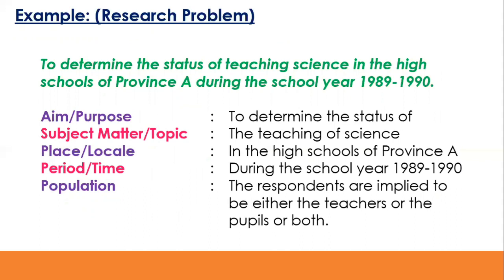To better understand what a research problem is, here's an example: 'To determine the status of teaching science in the high schools of Province A during the school year 1989 to 1990.' Using the elements — the aim or purpose is 'to determine the status of.' The subject matter is 'the teaching of science.' The place or locale is 'in the high schools of Province A.'